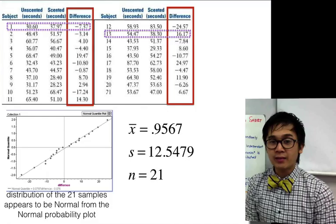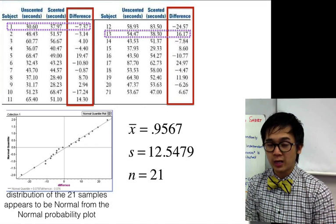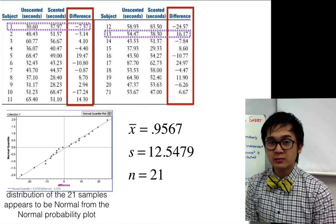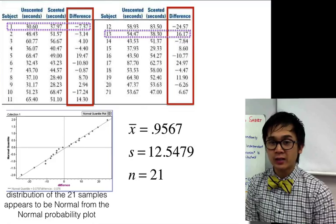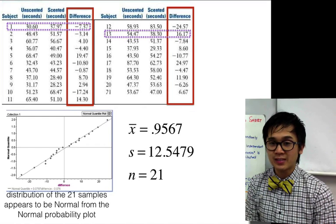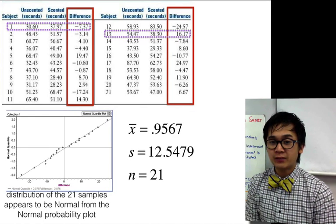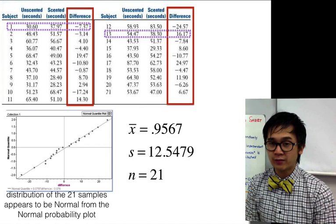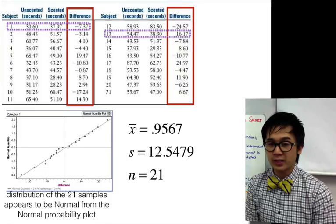After finding the mean and standard deviation of the 21 students, we found that the mean difference for their time trials is 0.9567 seconds, with a standard deviation of 12.5479 seconds.